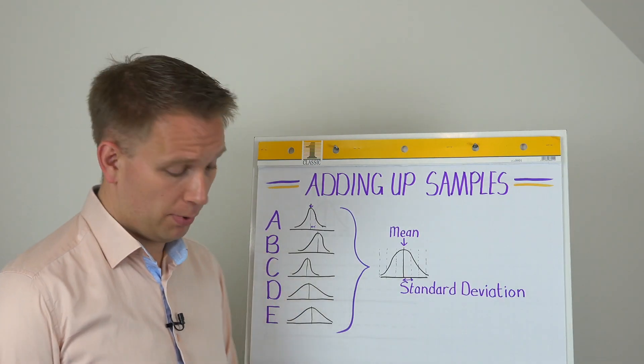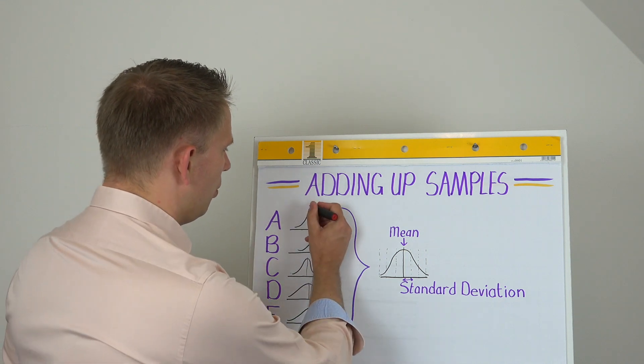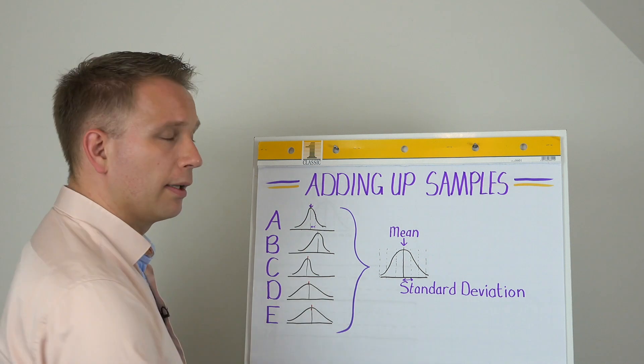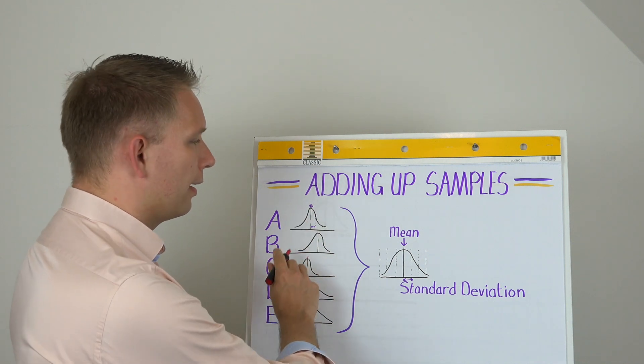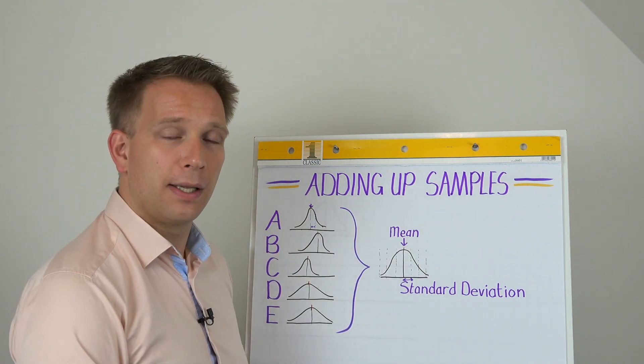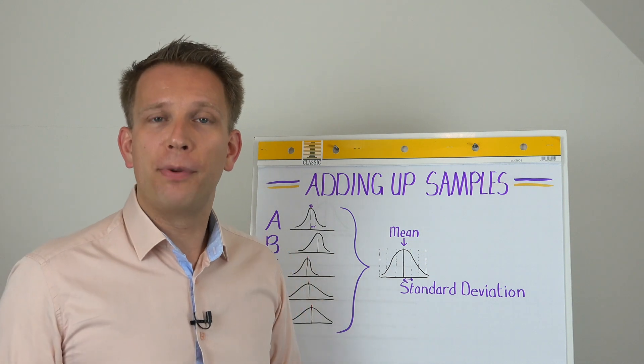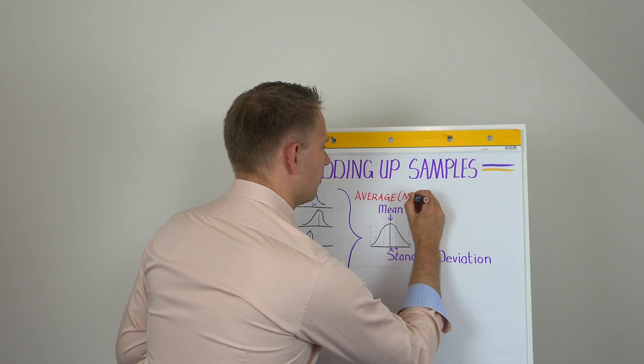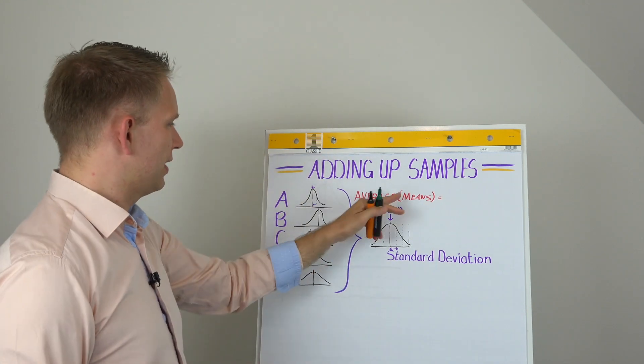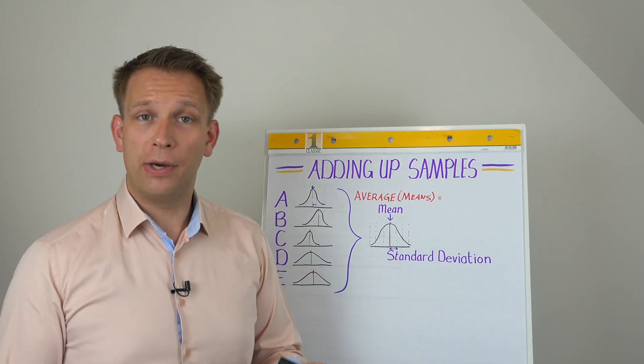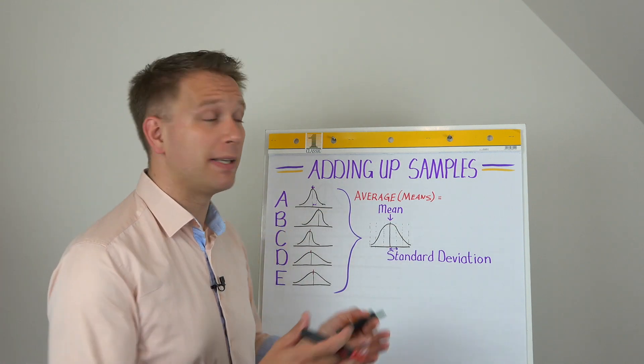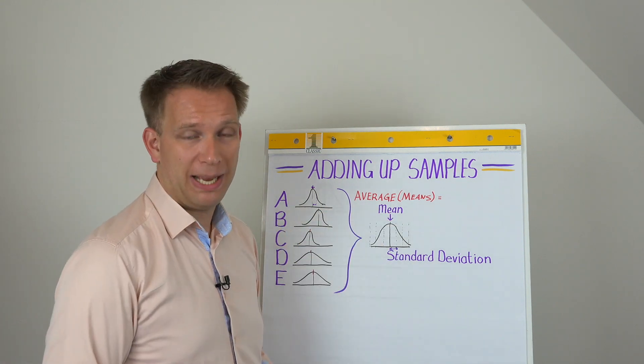This one is relatively simple. So we know all these means and if we take these four, then the mean we get here is in fact the average of the mean, so the mean of the means. So taking the average of the means of our samples gives us the average or actually the mean of our total sample set.